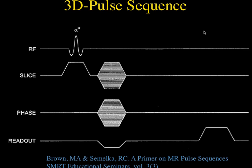That's a 2D Fourier transform pulse sequence. There's another way to do this: you can phase encode in two directions. In this case, we phase encode in the slice direction and in the y-direction, and do a readout in the x-direction — this would be a 3D technique. The problem is it takes much longer because for every phase encoding in one direction you have to go through all the phase encodings in the other direction. Using the old-fashioned technique, this could take an hour.